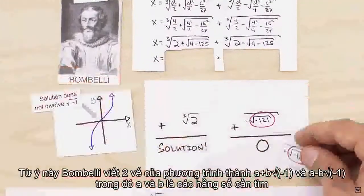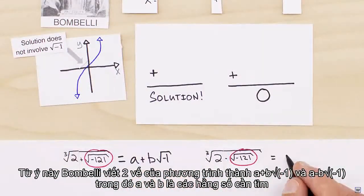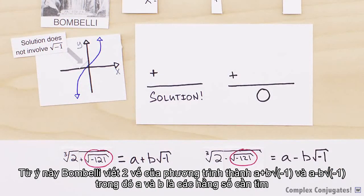Bombelli used this idea to equate the two parts of the equation to a plus b times the square root of minus one and a minus b times the square root of minus one, where a and b are constants that we need to find.